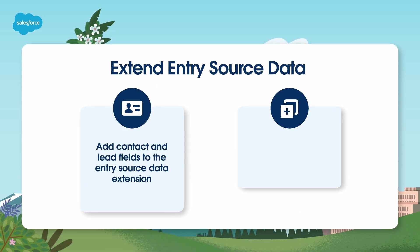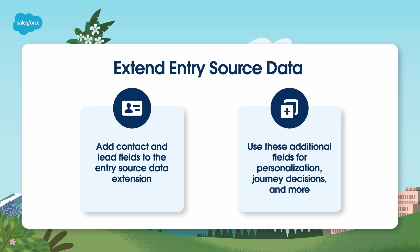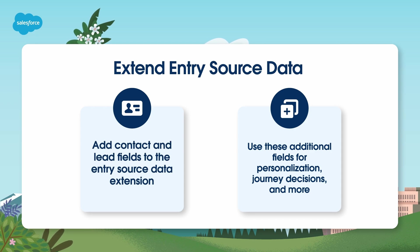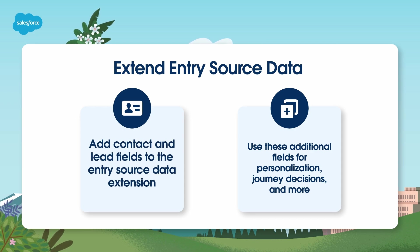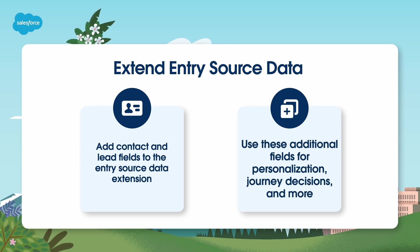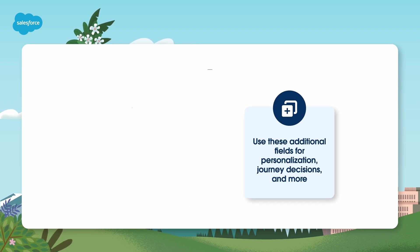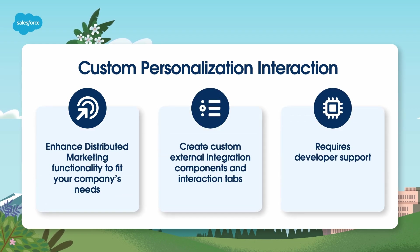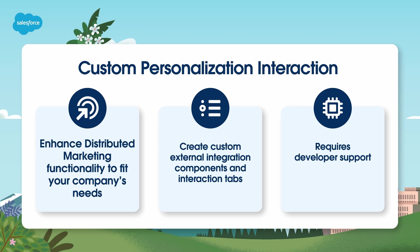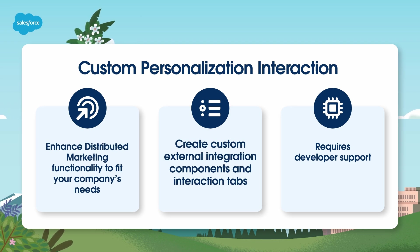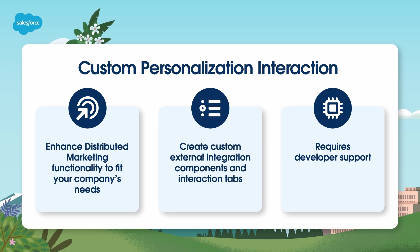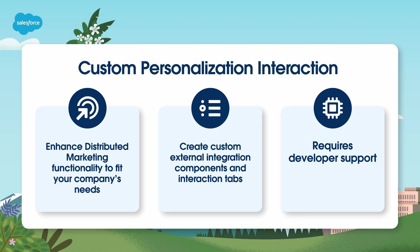Next, extending the entry source data. The data extension you create for distributed marketing uses a standard set of fields to populate the associated journey's entry source data extension. With the help of your Salesforce developer, you can add more fields from the lead or contact objects to the entry source data extension. These additional fields can then be used for content personalization, journey decisions, and more. Next up, custom personalization interactions, also called CPI. With custom personalization interactions, you can enhance distributed marketing functionality to fit your company's needs by creating external integration components and adding custom integration tabs to your workflows. For example, giving business users the ability to change who the email appears to be coming from by specifying a different team member of the same group. Please note, Salesforce developer skills will also be required here.